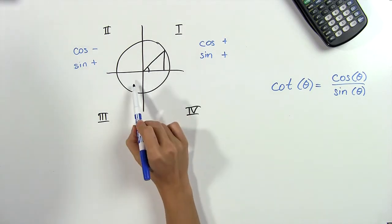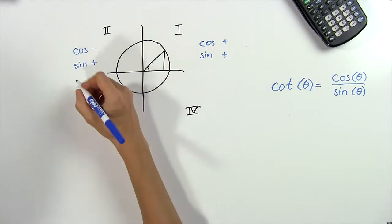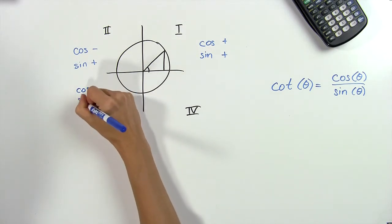Now let's look at the third quadrant. Here, both coordinates are negative, so both cosine and sine are negative.